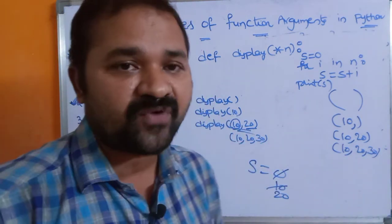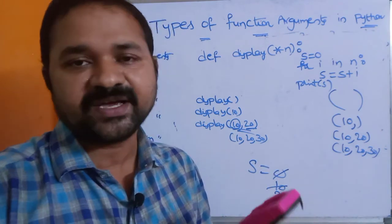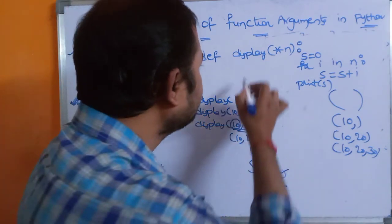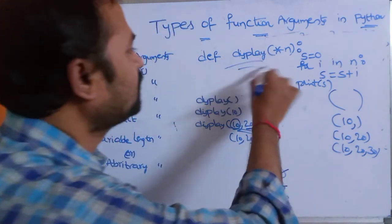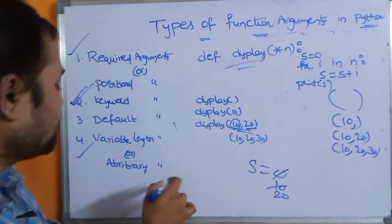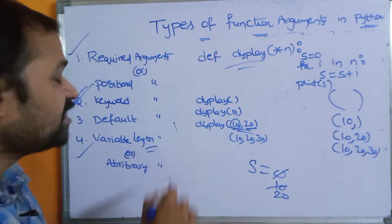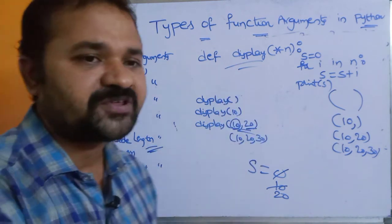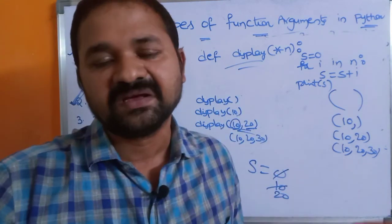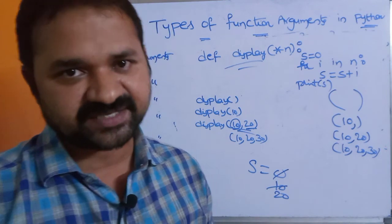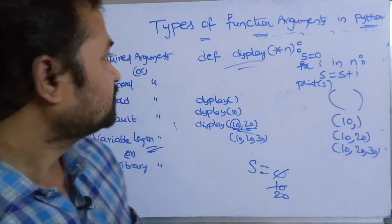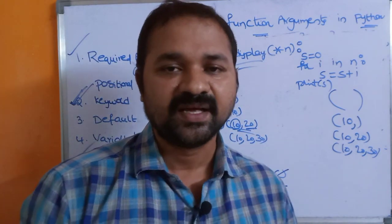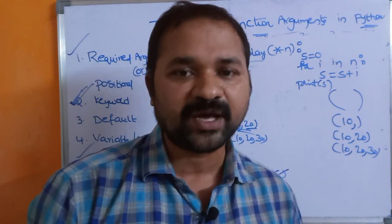If we don't know how many arguments we need to pass, we can use arbitrary arguments or variable length arguments. Variable length means the number of arguments can vary — it is our choice. This is about the types of function arguments in Python programming.